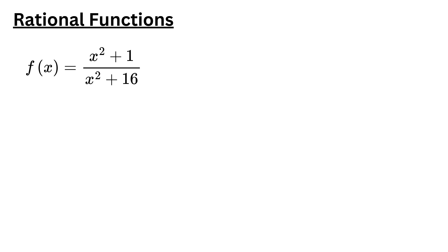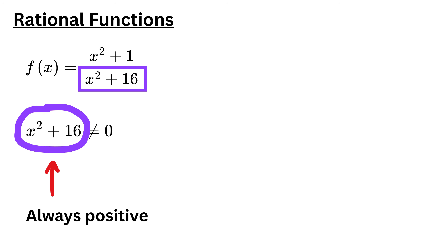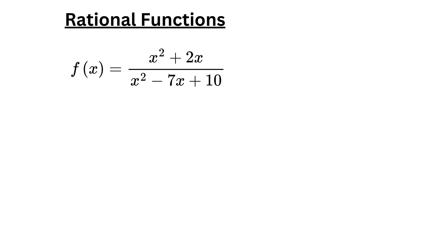For the next function to be defined, x squared plus 16 must not equal zero. Notice that squaring any real number always gives a non-negative result. Then adding 16 to that squared value always produces a positive number. Therefore, this expression can never be zero. Since no real value of x makes the denominator zero, the domain of this rational function is all real numbers.